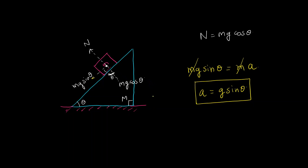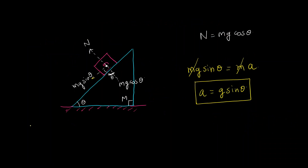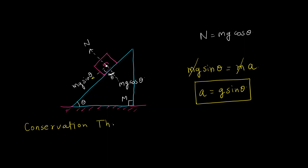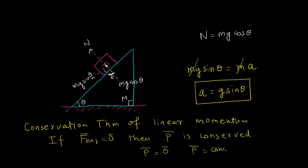Since we have defined momentum, we can also define the conservation law of momentum. The conservation theorem for linear momentum states that if there is no external force (i.e., the external force equals zero), then the linear momentum p-bar is conserved — it is constant. That is, p-bar-dot equals zero, which means p-bar equals a constant, so it is conserved.